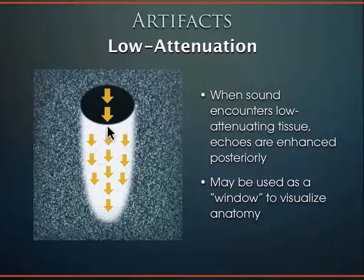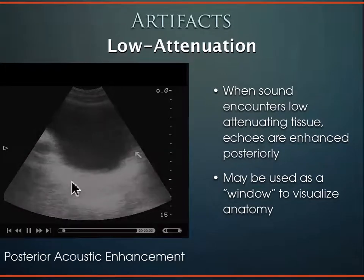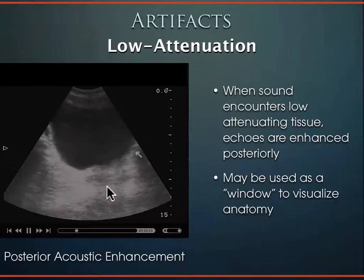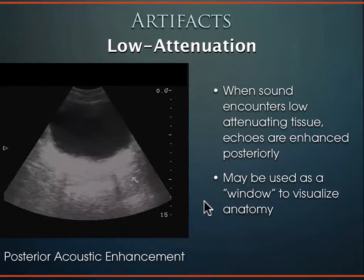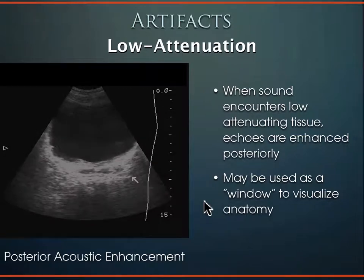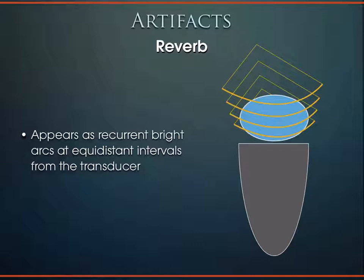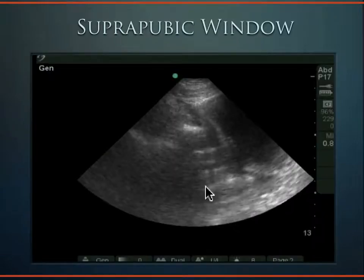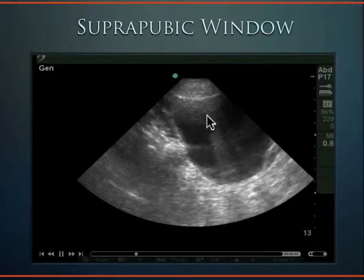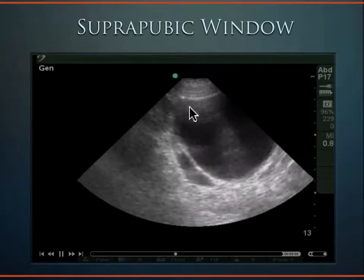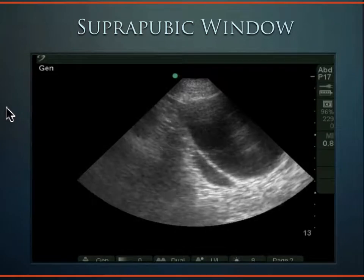Keep in mind that the bladder is a low-attenuating structure. Sound loves to travel through it, and everything behind it becomes hyperechoic — so you may need to turn down the far-field gain because structures behind the bladder can be over-gained. Another artifact is reverberation artifact, or reverb — equidistant bright arcs coming down from the transducer. We see that a lot with the bladder — these equidistant arcs coming through.